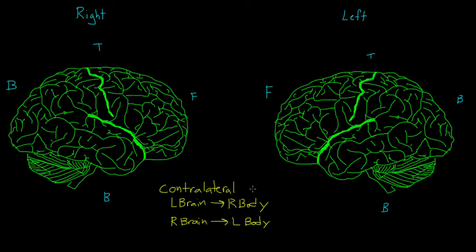And this is true for basically all of your senses. So information from your left visual field goes to the right side of your occipital cortex. The motor neurons on the right side of your brain control the left side of your body. The only thing that I can immediately think of that this doesn't apply to is smell. In that case, the two cerebral hemispheres communicate ipsilaterally instead of contralaterally.